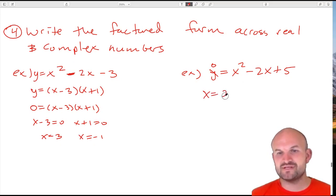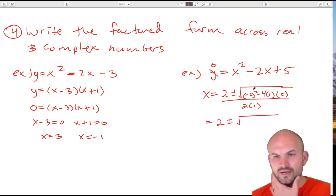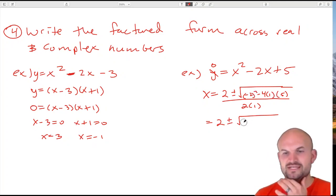The quadratic formula is negative b plus or minus square root of b² - 4ac, all over 2a. So let's see: this becomes 4, that becomes negative 20, so 4 minus 20 is negative 16 divided by 2.